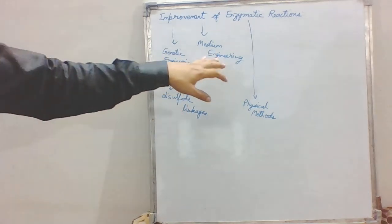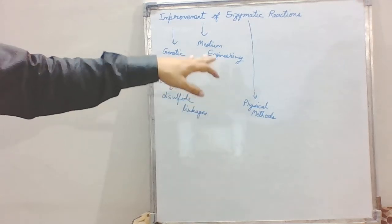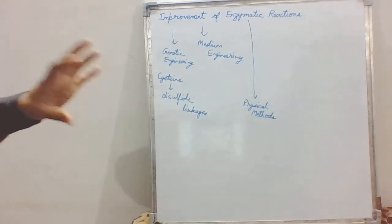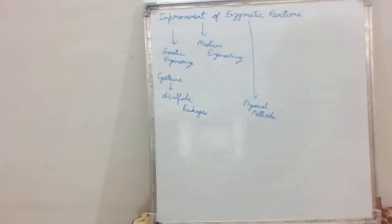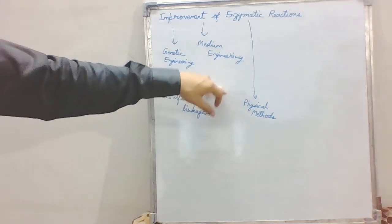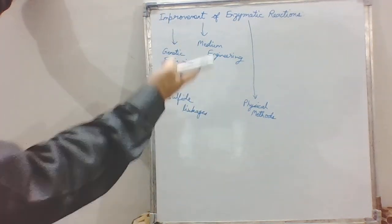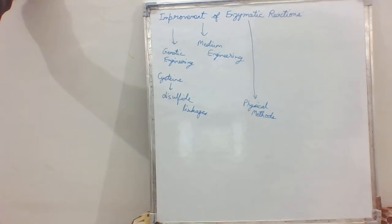Similarly, there is another field called medium engineering. We can change the medium of the enzymatic reactions from aqueous to organic, to supercritical, to ionic liquids. We can explore different mediums. Using organic solvents is also a very promising technique in the medium engineering domain.